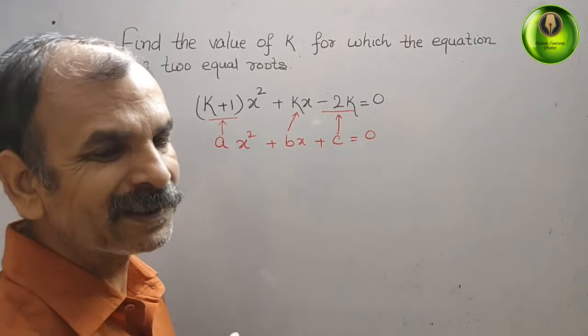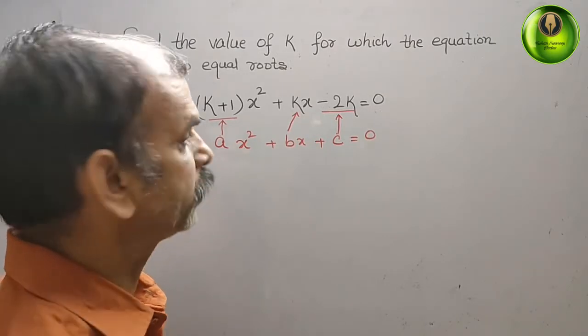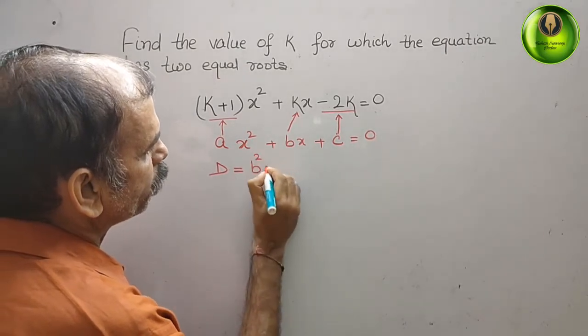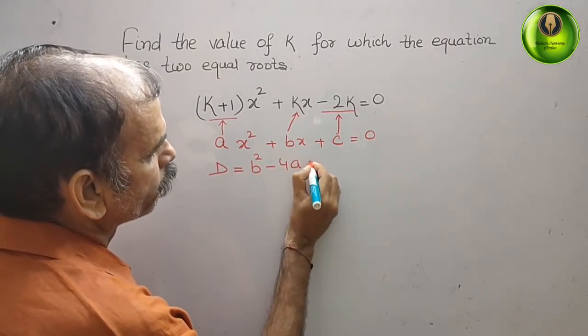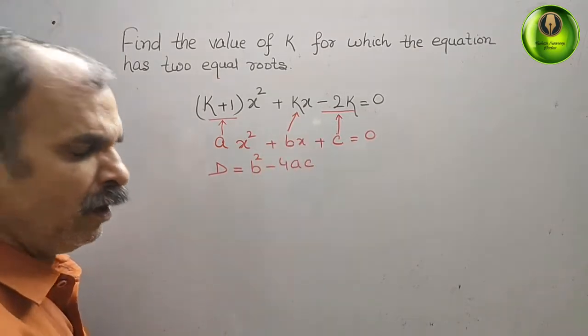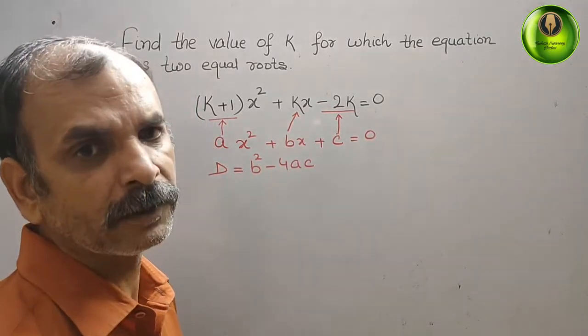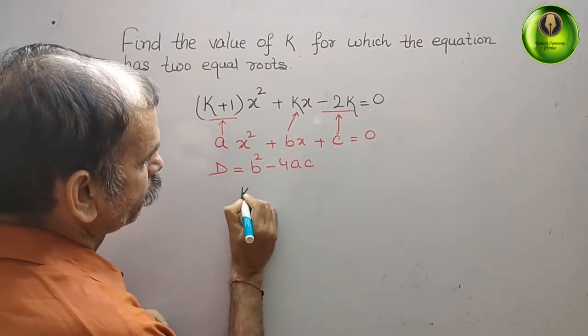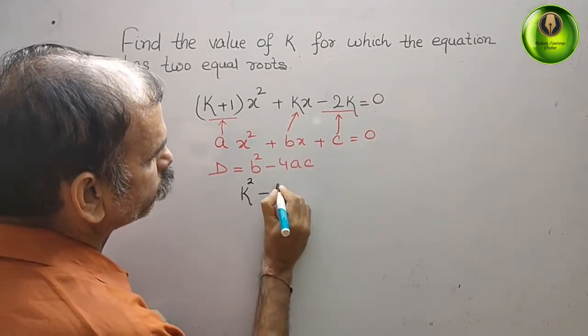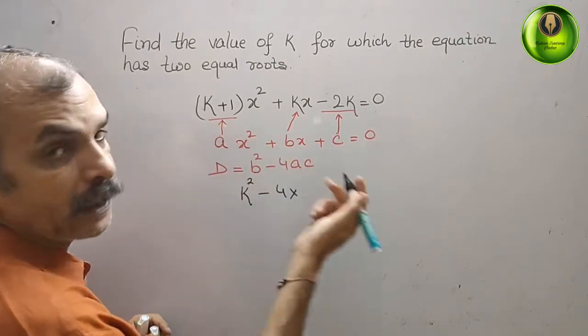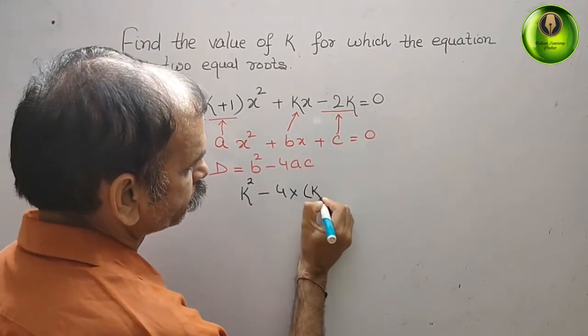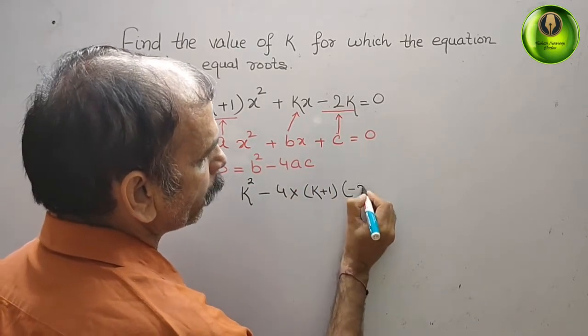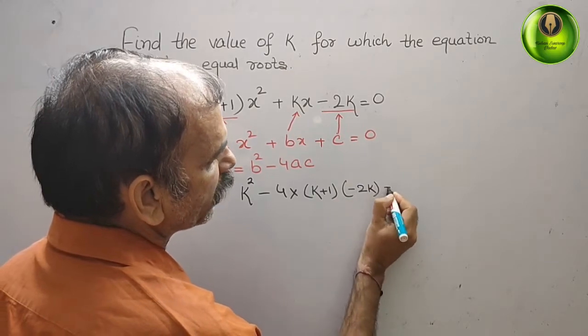Now we will write the discriminant. What is that? Discriminant is nothing but b² - 4ac. Now substitute this value. What we will get? We will get k² - 4(k+1)(-2k) = 0.